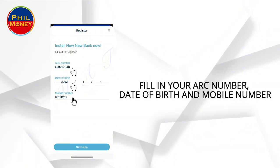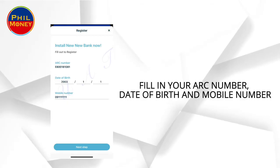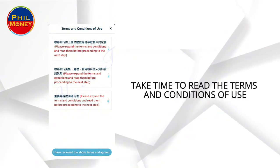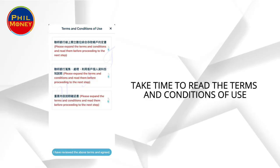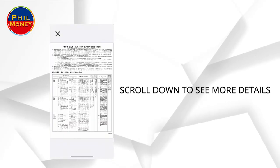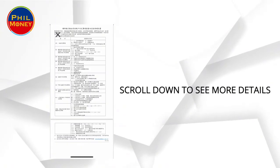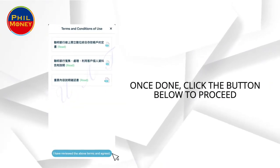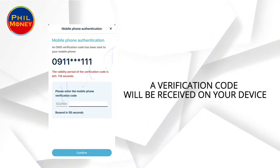Provide the following to proceed with the account registration: fill in your ARC number, date of birth, and mobile number, then click next to proceed. Take time to read the terms and conditions of use; scroll down to see more details, then click the button below to proceed.